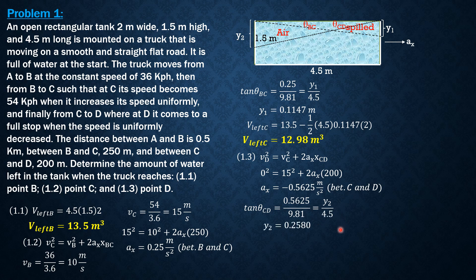So the volume left in the tank when the truck reaches D is original volume 13.5 minus this volume of air here, which is 1/2 of 4.5 times Y2, which is 0.258 times width perpendicular to the board 2 meters. So volume left at D is equal to 12.34 cubic meters. That's all for this problem, and see you for the next example.